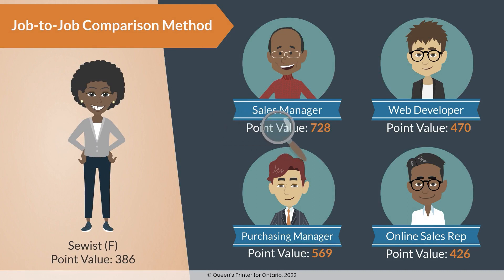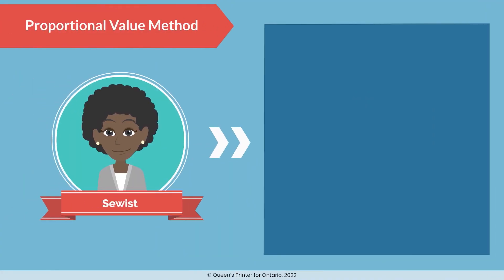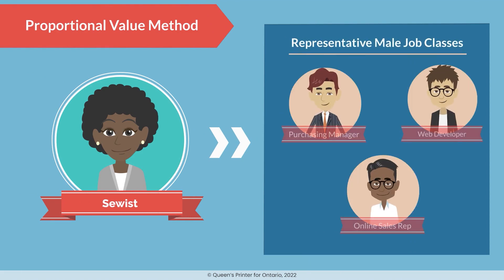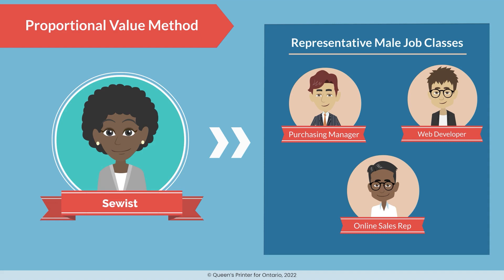If we discover that we have female job classes with point values that can't be closely matched to a male job class within our company, then we switch to the proportional value method, which uses a completely different approach. We still use the male job classes that we have, but instead of trying to find a single direct comparator, we use three or more male job classes at the same time to create an indirect comparison.